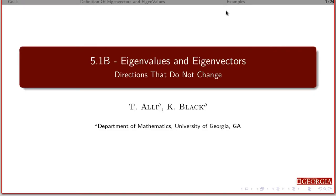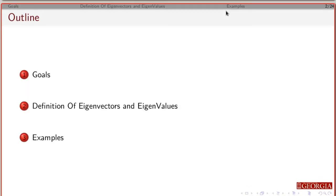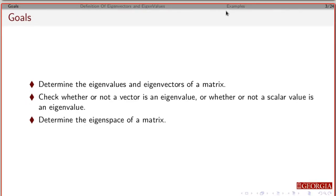This is the second part of these videos on eigenvectors and eigenvalues, and now we're going to finally get in and talk about how you actually calculate these things. Again I'll repeat the goals from the last video: define eigenvectors and eigenvalues, go through some examples, and demonstrate how this works. By the end of this you should be able to figure out the eigenvectors and eigenvalues of a matrix if I give you the matrix.